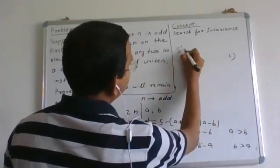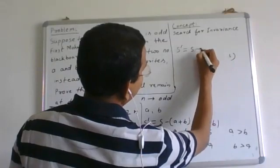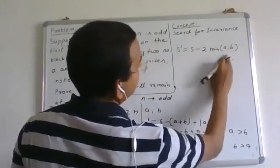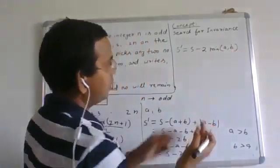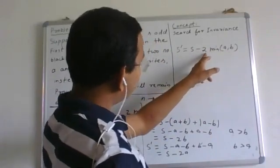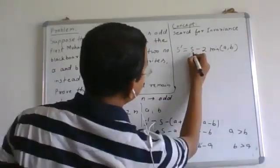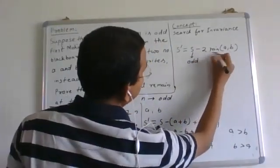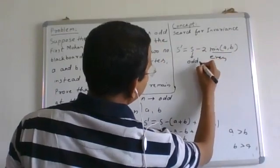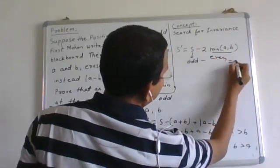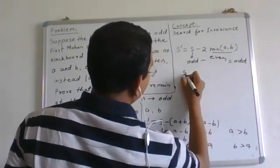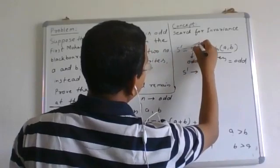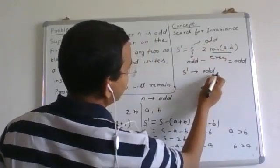So the new sum s dash is nothing but s minus twice of minimum of a and b. Whatever 2 numbers a, b selected, minimum of that number and twice of that must be subtracted from s. Since s was odd earlier and 2 times some number is even, so odd minus even will be odd. So we are finding s dash again odd.